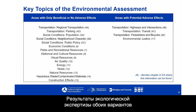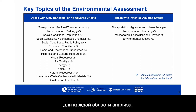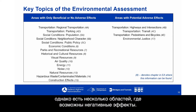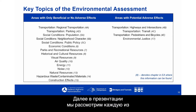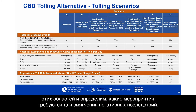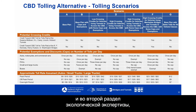The environmental assessment explores each of the topics shown in this chart, with specific chapters identified for each analysis area. The analysis shows that most areas have beneficial effects or no adverse effects, but there are a few areas with potential adverse effects. Subsequent slides will address each area and identify any required mitigation. This information is also available in the executive summary and Chapter 2 of the Environmental Assessment.